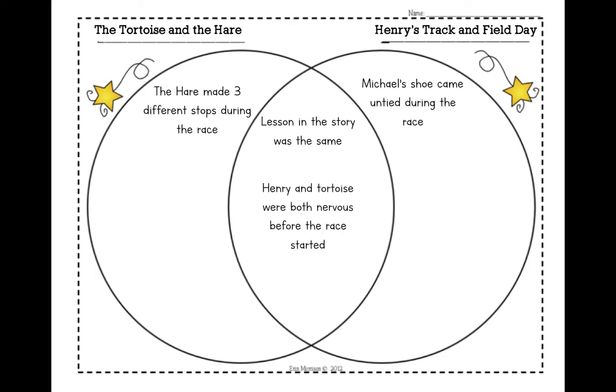And then the other one that I put was that Henry and the tortoise were both nervous before the race started. So Henry was nervous before he started his race against Michael and tortoise was nervous before he started his race against hare, and they were both nervous because they both were afraid they were going to lose. That is something that happened in both versions of the story.